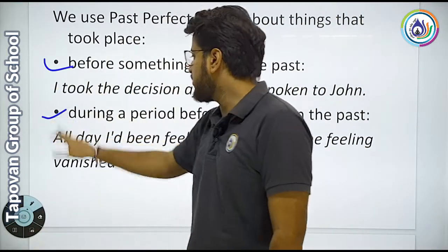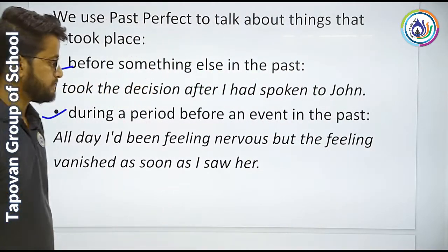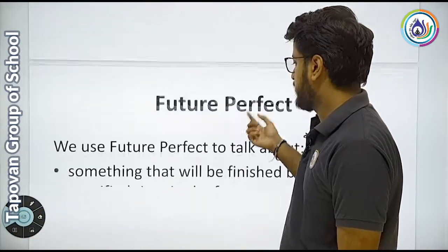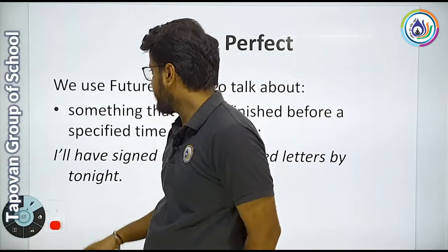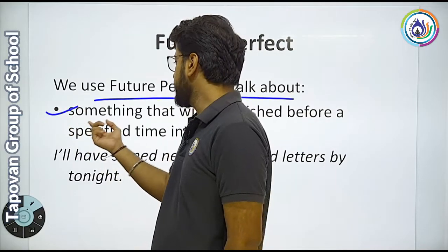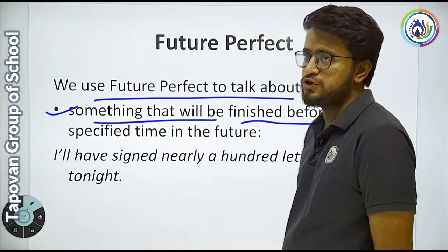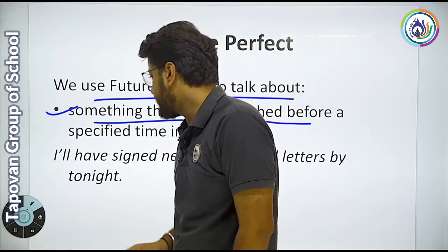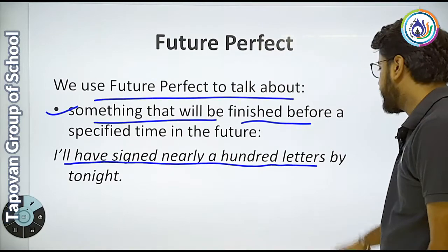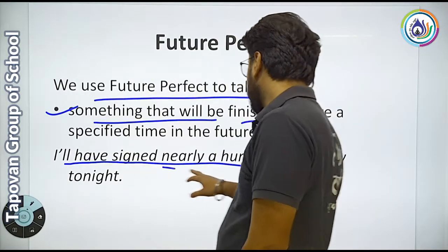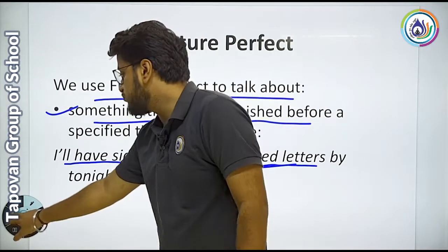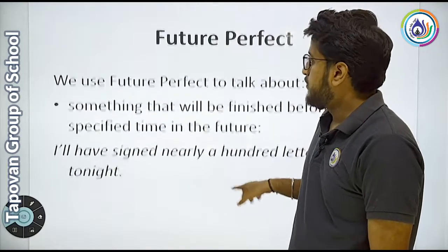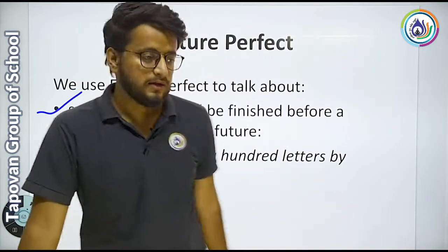ये points आपको note down करके अपनी notebook में लिख लेना है. अब हम बढ़ते हैं आगे की तरफ — future perfect tense की तरफ. Future perfect tense हम किसके बारे में बताने के लिए करते हैं? Point one: something that will be finished before a specific time in the future. एक future के specific time के पहले कुछ चीज़ें जो खतम हो जाएंगी. Example: I will have signed nearly a hundred letters by tonight. मुझे आज रात तक hundred letters sign करने हैं. ये चीज़ें भी आपको note down कर लेनी हैं अपनी notebook में.